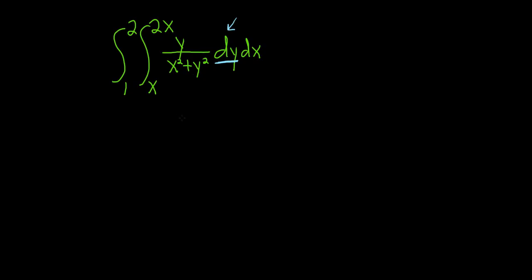We'll start by making a u-substitution. We'll let u be equal to x squared plus y squared. Now we'll compute du. Keep in mind when we're computing du, we're taking the derivative of both sides, and here we're treating x as a constant. So when you take the derivative of x squared, you get 0, and we get 2y dy.